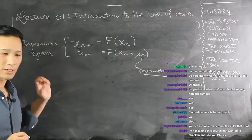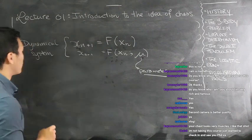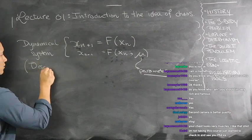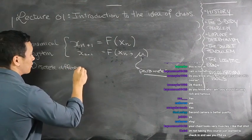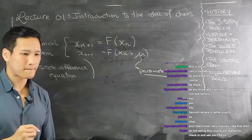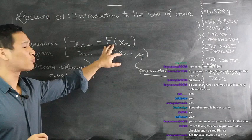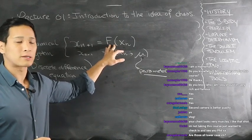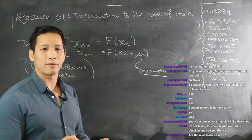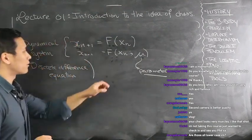Sometimes when you talk about dynamical systems you might be referring to differential equations, something much more complicated, but you can also refer to these simpler discrete difference equations. What we're going to find is that we can start off with really simple-looking f — polynomials, quadratics, cubics — and get astoundingly elaborate, chaotic behavior. I haven't defined what chaotic means yet, but that's the beauty of this course.